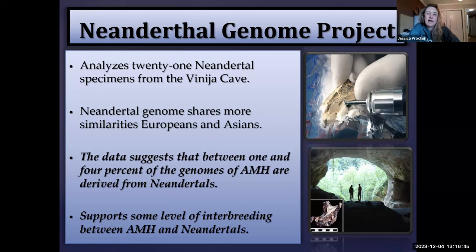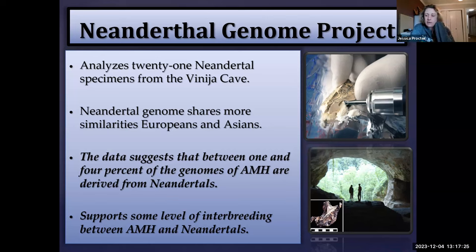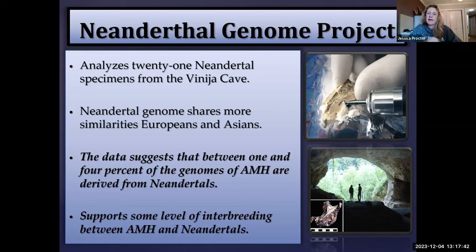Neanderthals coexisted with anatomically modern Homo sapiens for at least 10,000 years. We have solid evidence that Homo sapiens reached Europe by at least 40,000 years ago and Neanderthals were already there. It's always been a huge question: did they interact, compete, or interbreed? That's been a major question in paleoanthropology for many decades. The Neanderthal Genome Project was able to provide genetic evidence that Homo sapiens and Neanderthals did in fact successfully interbreed and produce viable, fertile offspring.